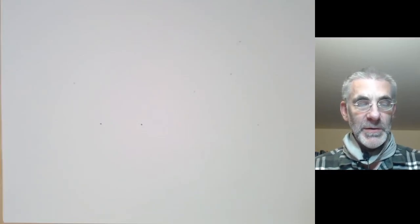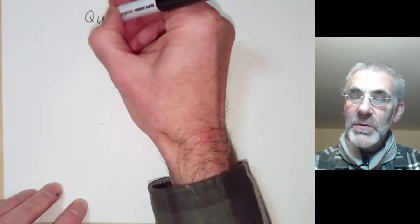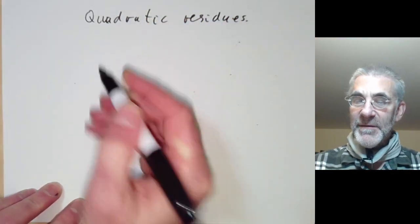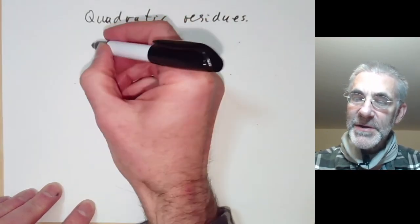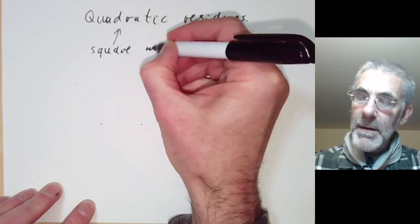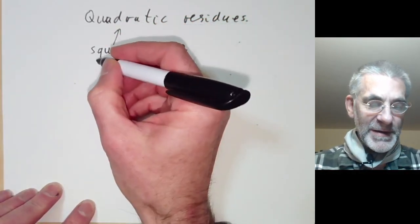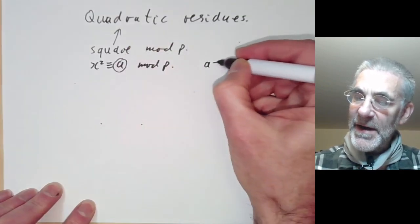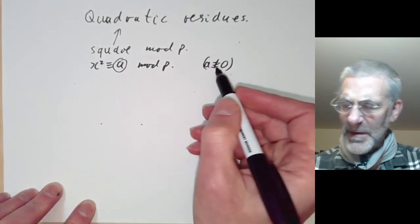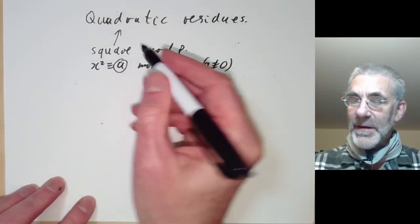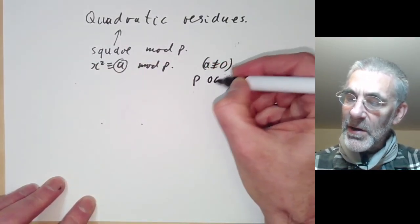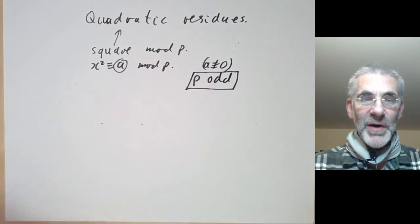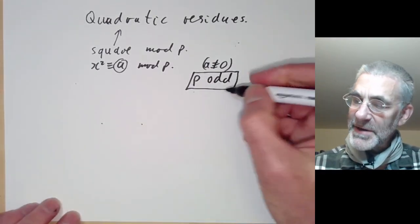This lecture is part of an undergraduate course on the theory of numbers and will be about quadratic residues. A quadratic residue is just a slightly fancy name for a square mod p. If x squared is congruent to a mod p, then a is called a quadratic residue, provided a is not congruent to 0. The case a equals 0 is a bit of a special case. In the discussion of quadratic residues, we normally assume that p is odd, because p being equal to 2 is a rather exceptional case that behaves differently from everything else. So p is going to be an odd prime.